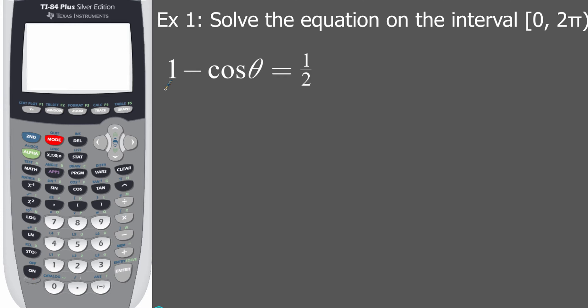If you subtract one on both sides, normally I wouldn't show this because you guys are at a level where you could do that in your head, but you'd have negative cosine of theta equals one half minus one, and you end up with negative one half. But I have to get rid of this negative sign in front of the cosine, so I would multiply or divide by negative one to come up with cosine having a value of one half.